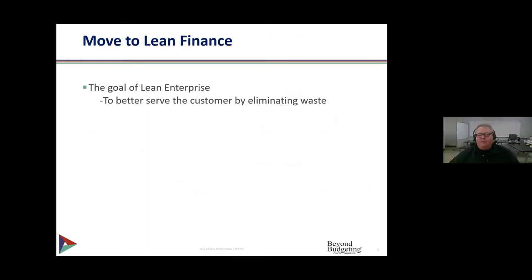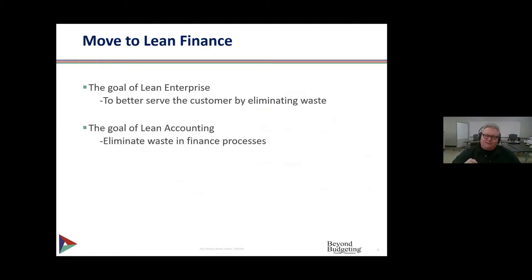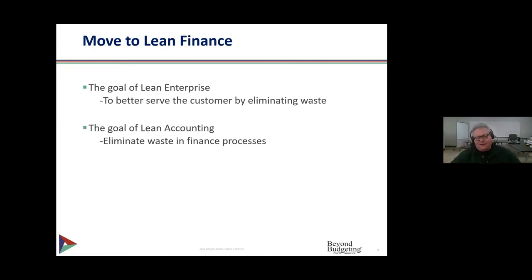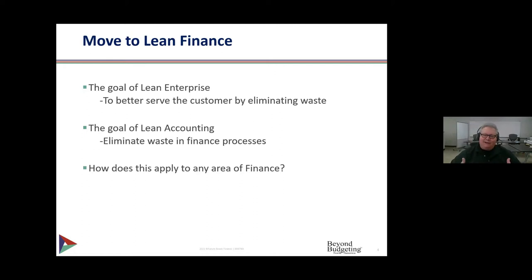The difference between lean and non-lean is that lean focuses on customer pull, while traditional manufacturing and service companies focus on a push approach. Applying those same principles to finance, Taiichi Ohno — the engineer behind the Toyota Production System — defined the goal of a lean enterprise as better serving the customer through elimination of waste. Applied to accounting, we're trying to eliminate waste in the financial processes.